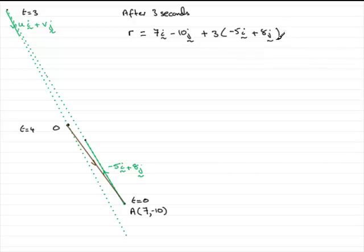Now I can clean this up by grouping together the i components and the j components. So what we have is 7 minus 15i, so that's minus 8i. And we've got minus 10j plus 24j, so that's going to be 14j.